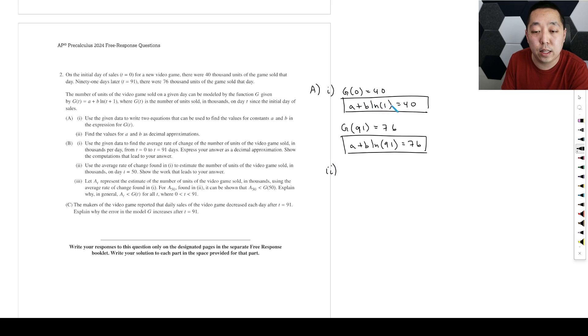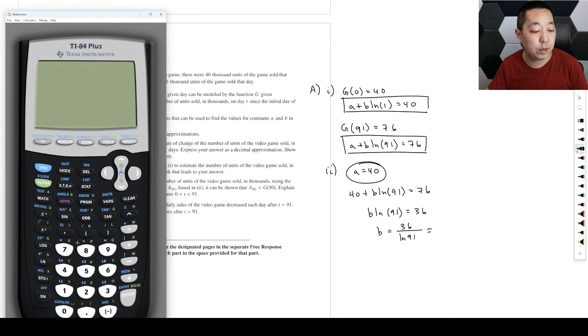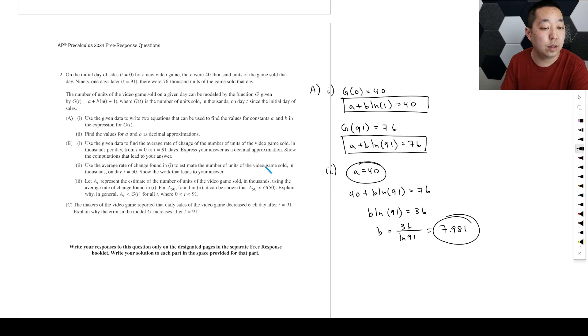And then now we want to solve those. So this one, ln of 1 is zero. So really A is just going to equal 40. And then you plug that into here. So then you're going to have 40 plus B natural log of 91 is equal to 76. So we're going to subtract 40 is going to give you 36 and then divide by natural log of 91. So this is a still calculated question and they want it a decimal approximation. So what they want you to do is use your calculator. ln of 91. 7.981.